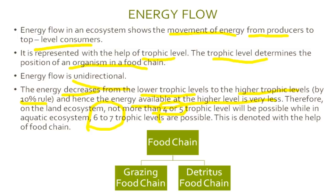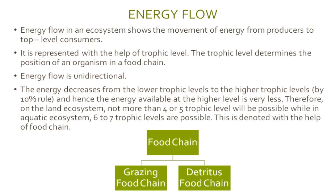This is denoted with the help of a food chain. If a question is asked why land ecosystems have no more than 4 or 5 trophic levels and aquatic ecosystems have 6 to 7, the reason is that energy decreases as per the 10% rule. There are two types of food chains: grazing food chain and detritus food chain.